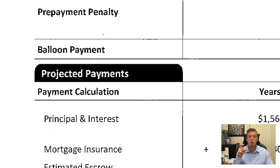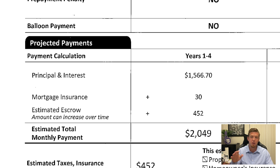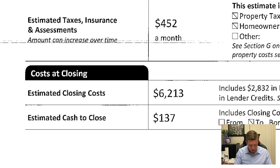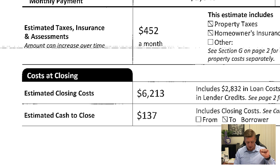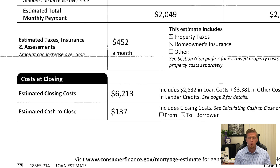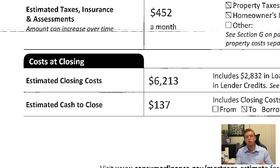You'll want to look towards the middle where it breaks down your projected payments. It tells you not only principal and interest, but any mortgage insurance, estimated escrow — which is tax and insurance — and your total monthly payment. It says whether or not tax and insurance are escrowed. Then at the bottom, it's got costs at closing and tells you the total — estimated closing costs — which is really loan costs and other costs. I'll explain more when we get into page two on why those are separated. When we're talking refinance, this $6,200 is not something you're paying out of pocket. It's rolled into the payoff of your old loan plus the new amount. The very last line on page one is estimated cash to close — in this case $137, and it's actually to the borrower, not from the borrower. So at close, the borrower is getting $137 back.